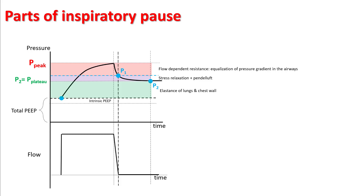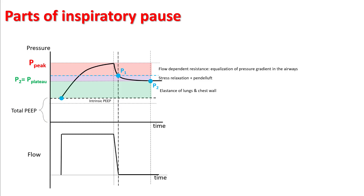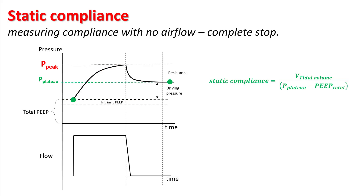You have to understand that you want to calculate the total PEEP — that means you have to know if there is an intrinsic PEEP, and you know that by performing an expiratory pause. To measure static compliance, you have to figure out the driving pressure, and the driving pressure is plateau minus PEEP, which is the green area showing the elastance of lungs and chest wall. So static compliance is tidal volume divided by plateau minus PEEP.